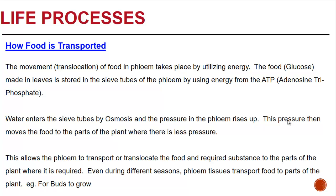How is food transported? The movement or translocation of food in phloem takes place by utilizing energy. The food, namely glucose, which is made in the leaves, is stored in the sieve tubes of the phloem using energy from the ATP molecule, or adenosine triphosphate. Water enters the sieve tubes by osmosis and the pressure in the phloem rises, causing the food to move to parts of the plant where there is less pressure. This allows the phloem to translocate food and required substances to parts of the plant where they are needed.